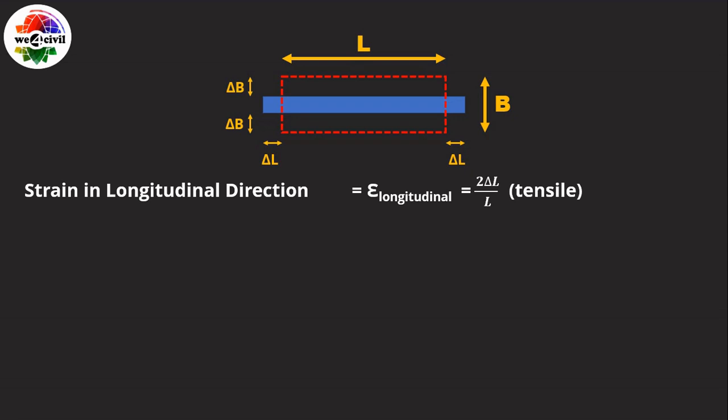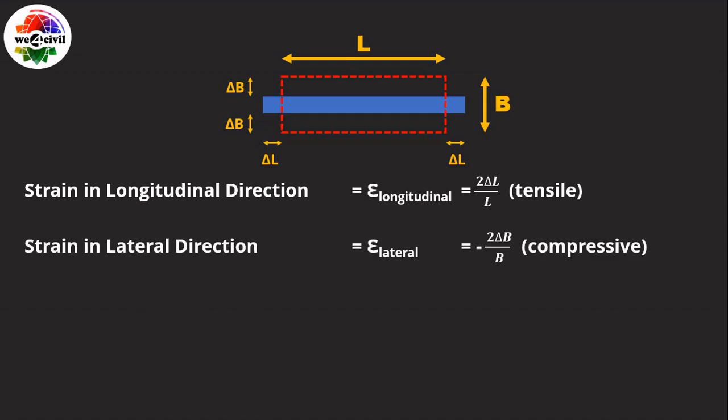Using that concept, the longitudinal strain equals 2 delta L divided by L, and the lateral strain equals minus 2 delta B divided by B. In the longitudinal direction the bar was elongated, so the strain is tensile. In the lateral direction the bar's size was reduced, giving a compressive strain, so we add a negative sign to the lateral strain.